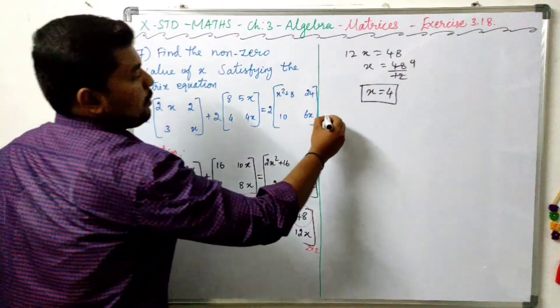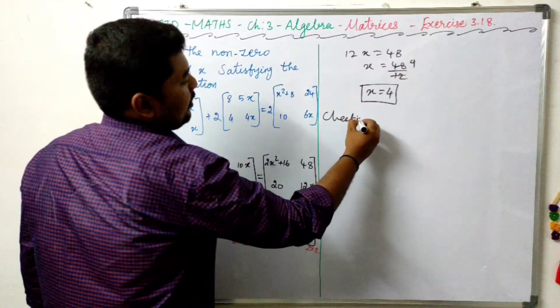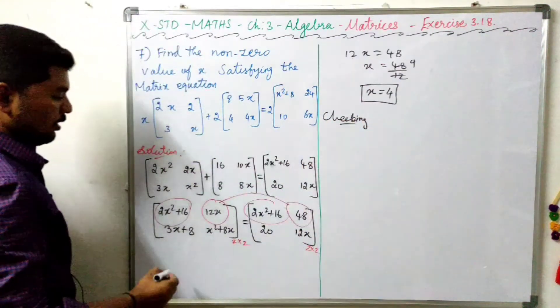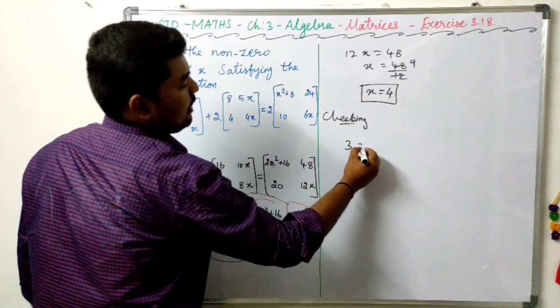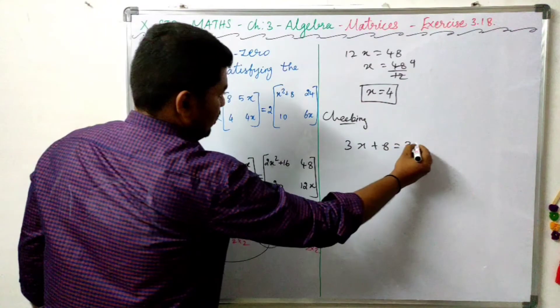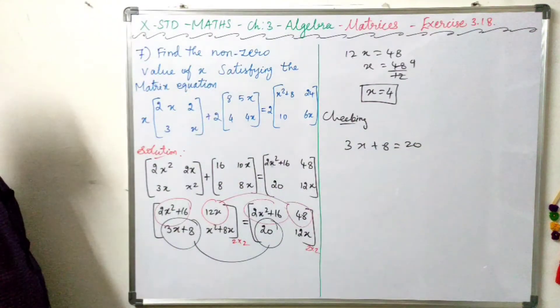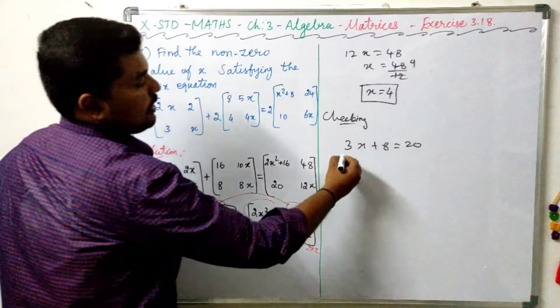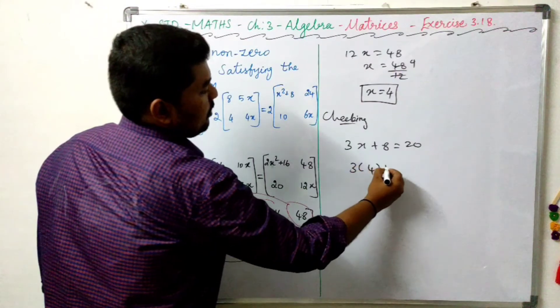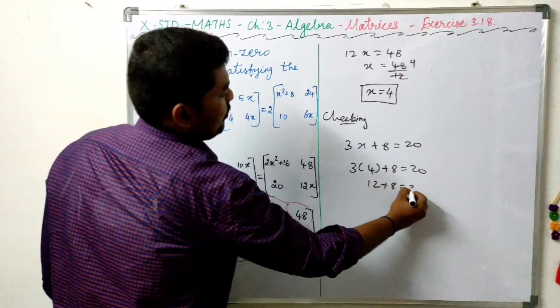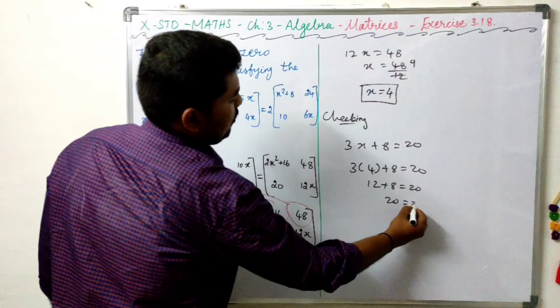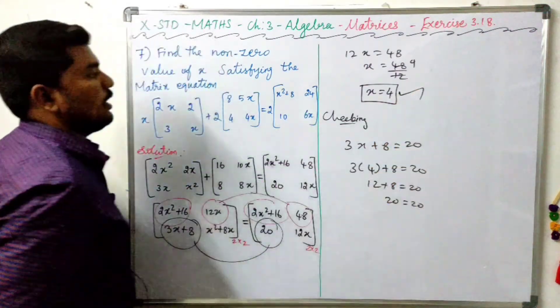If you want to check, you can check. Then we verify the equation. 3x plus 8 equals 20. We check x equals 4. If we substitute x equals 4: 12 plus 8 equals 20. 20 equals 20. So we have verified.